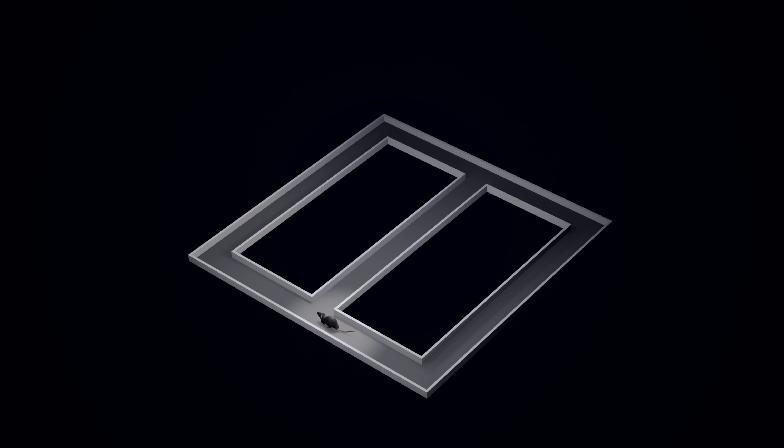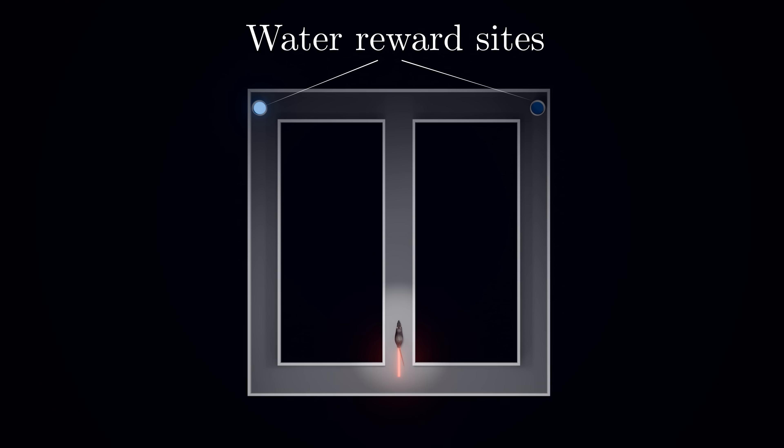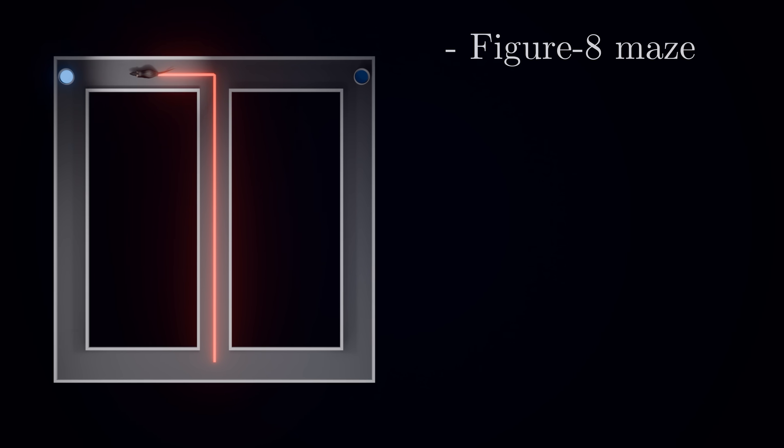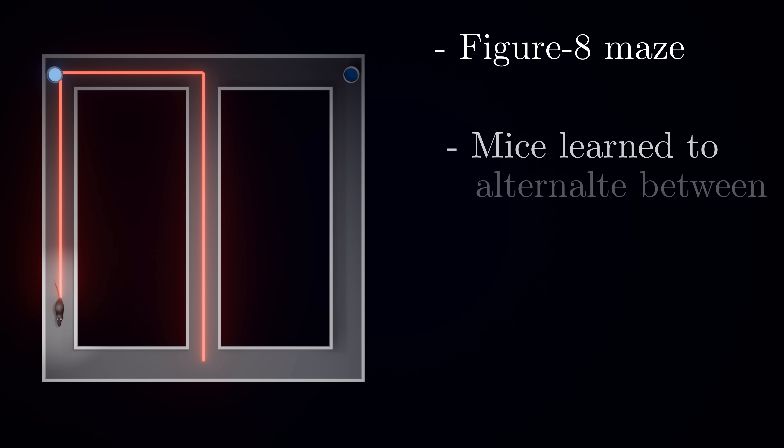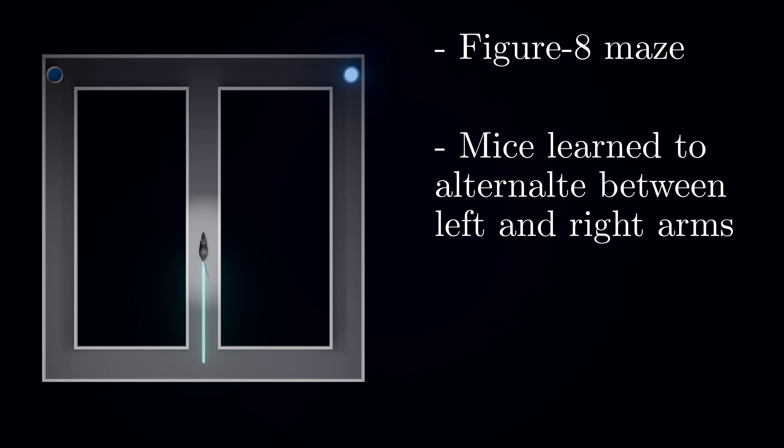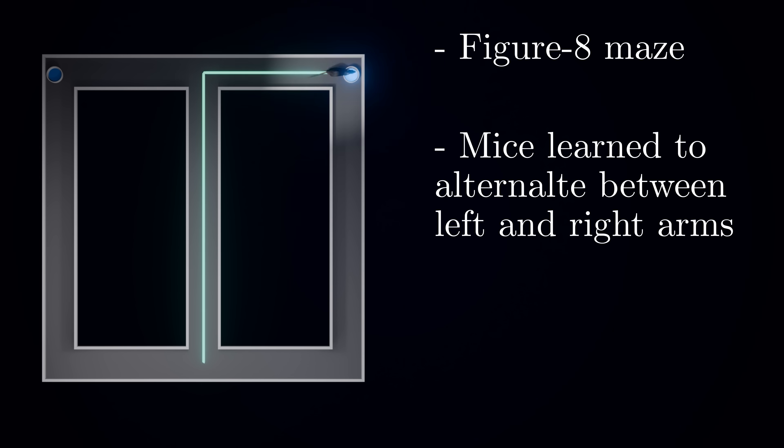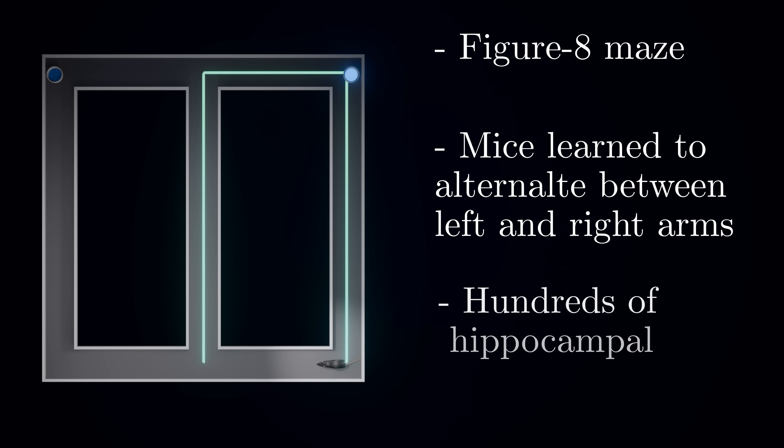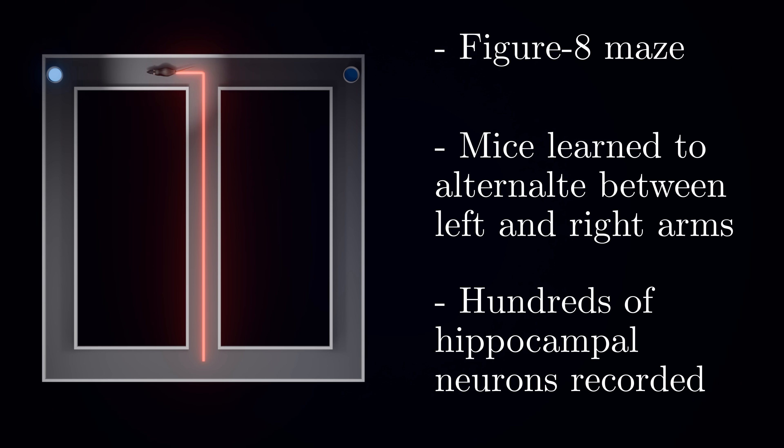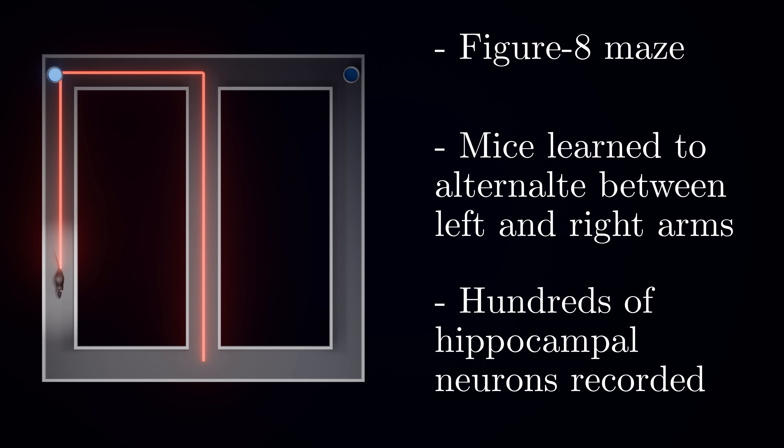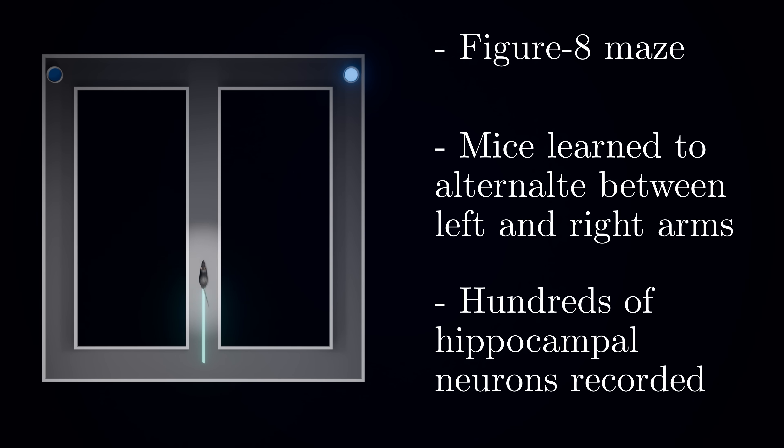They used an elegant experiment with a seemingly simple task that would engage episodic memory. Their setup involved mice running through a figure-8 maze with two identical arms, each containing a potential reward site. The challenge for the mice was to learn a specific strategy: alternate between the arms to receive rewards. If they found a reward on the left arm in one trial, the next reward would be on the right. By recording from hundreds of neurons in the hippocampus as mice ran through the maze over multiple days, researchers could watch the learning process unfold.